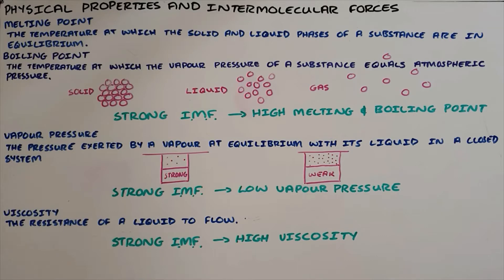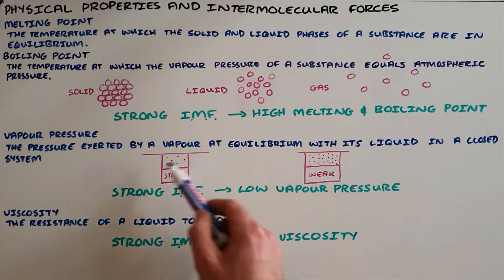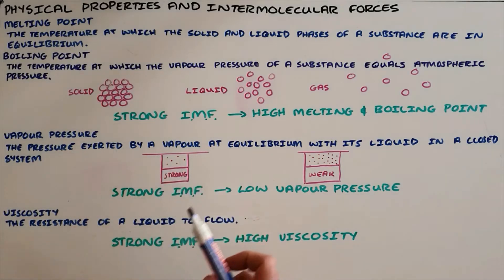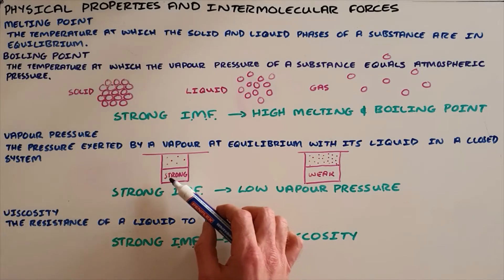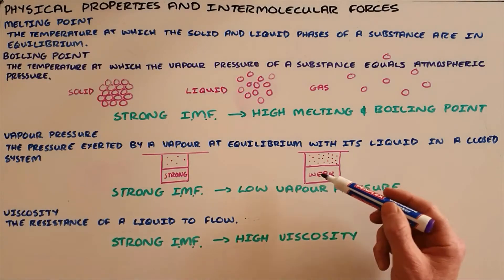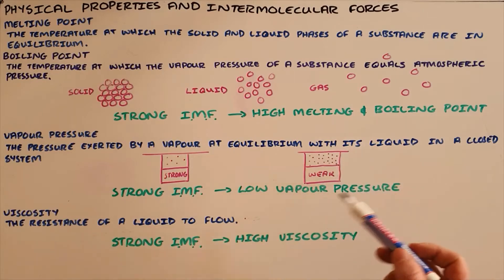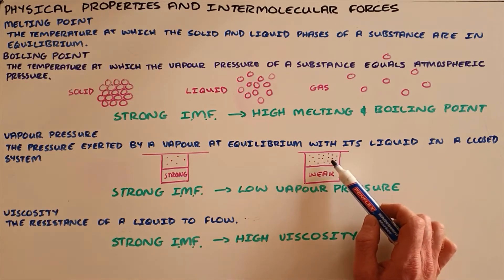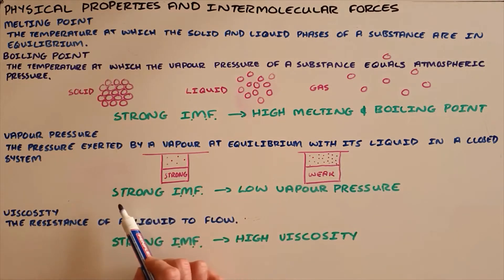The third physical property is vapor pressure, which is the pressure exerted by a vapor at equilibrium with its liquid in a closed system. There are always a certain number of particles able to escape from a liquid and become a gas, and in a closed system that gas exerts a force on the container. A substance with strong intermolecular forces would not easily allow particles to escape, unlike a substance with weak intermolecular forces. So substances with weak intermolecular forces have more gas particles and therefore a higher vapor pressure. Strong intermolecular forces result in a low vapor pressure.